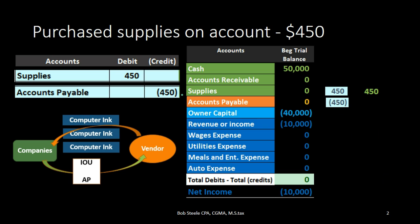Increasing the accounts payable account, the effect on the accounting equation is an increase in assets and an increase in liabilities in the credit direction, because they are credit balance accounts. There is no effect on the equity section, which is the entire blue area. On the supplies: you might ask why it's up here as an asset and not an expense. That is because we put supplies on as an asset and then expense them when we use them, if they will be used across multiple time periods.